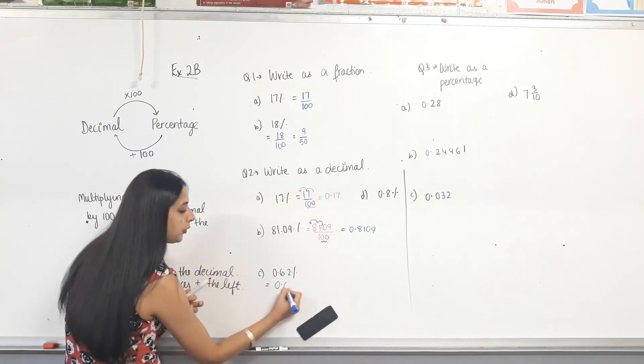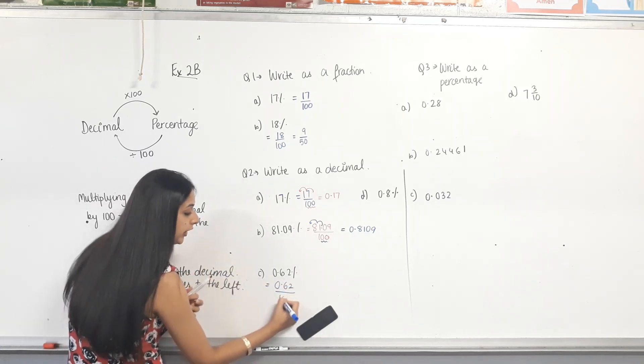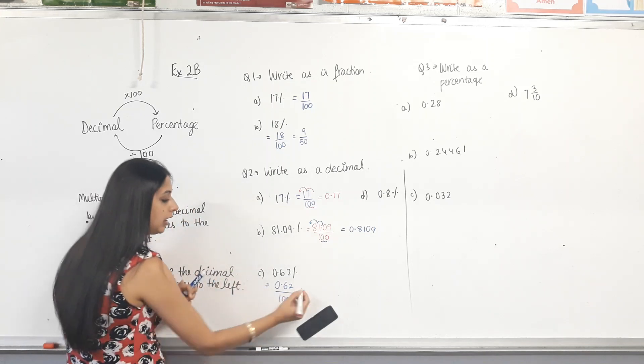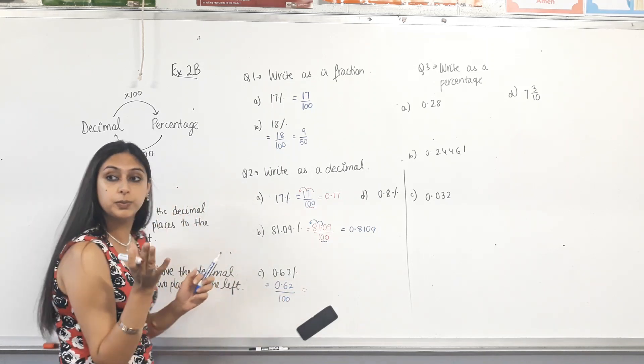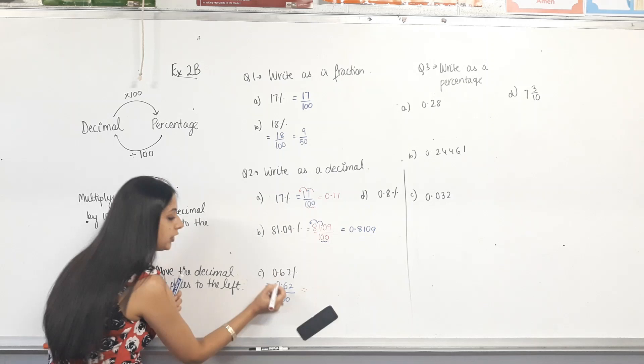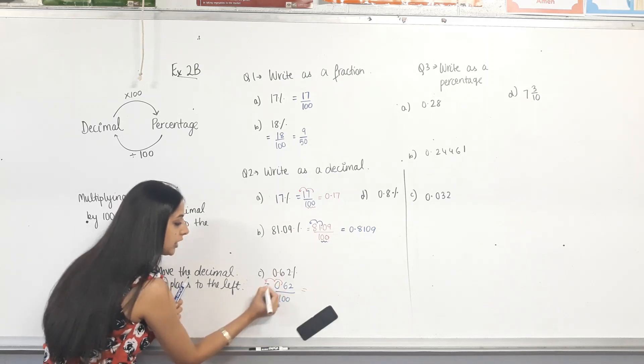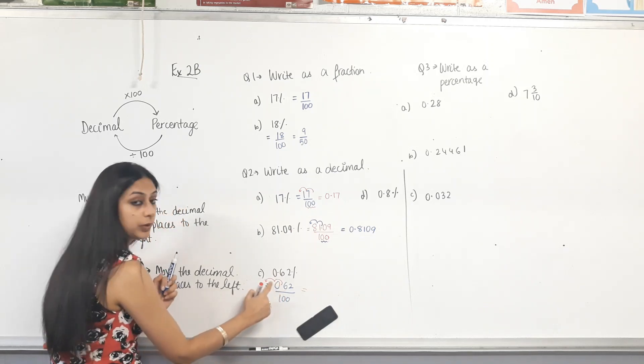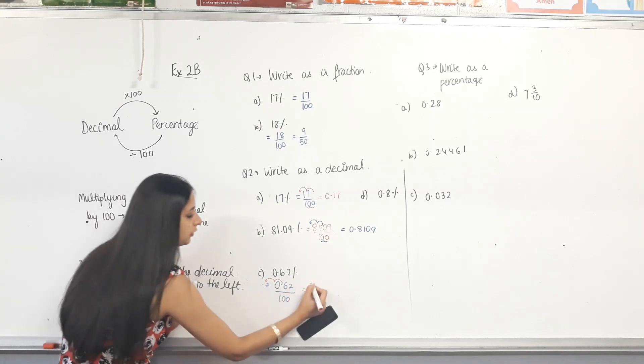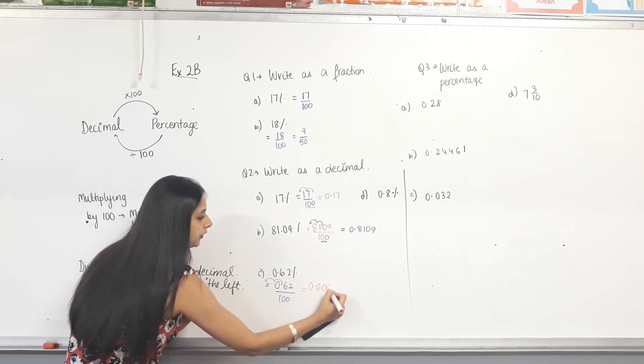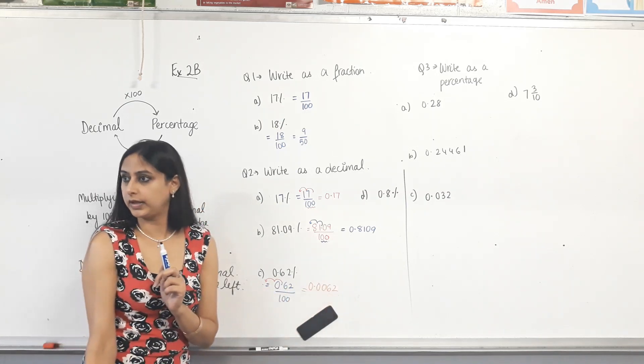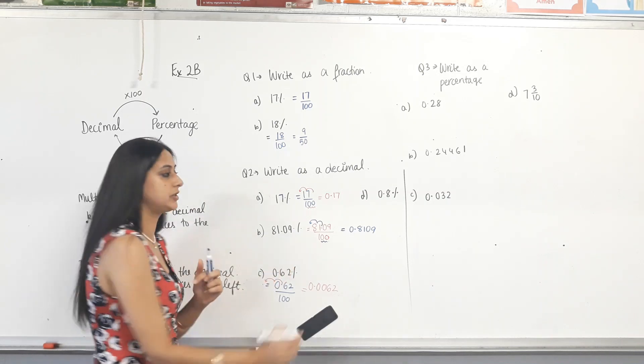Next one. 0.62 percent. So 0.62 over 100. And we are moving the decimal two places to the left. So 1, 2. So decimal will come here. And what will we fill this gap with? 0. That's it.